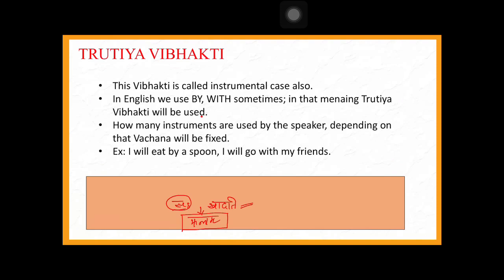Now tritya vibhakti — called the instrumental case in English. We use it when doing something with an instrument, going with someone, or traveling by a vehicle. In English, the words 'by' and 'with' indicate this case. The number of instruments used determines the vachana — singular or plural. For example: chamasaha means spoon. Aham chamasena khadami — I eat with a spoon — chamasena is tritya vibhakti.